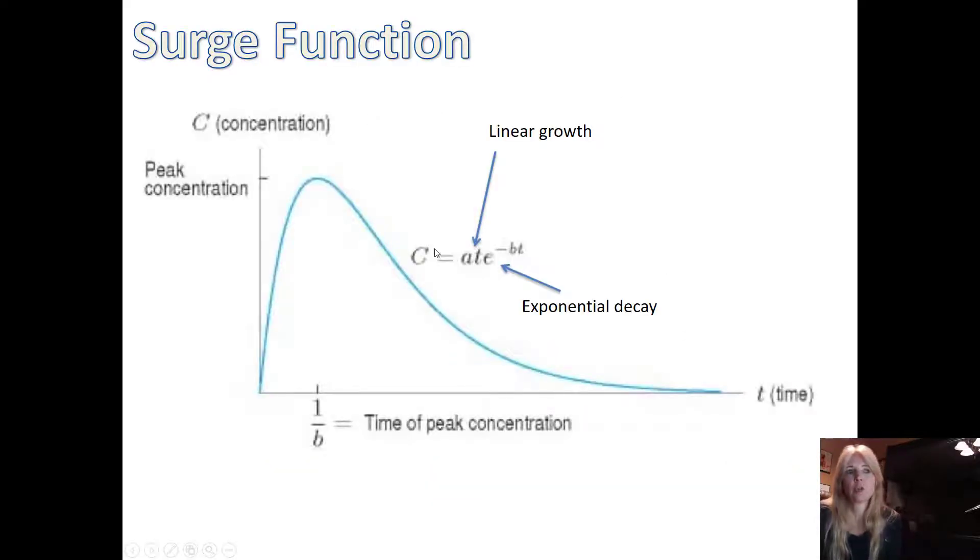Here is our surge function. This is what the function looks like, so you can see at that would be your linear times e to the negative bt, so that would be your exponential decay. Linear to start out, maxes out where? At 1 over b, and then it slowly decays out.